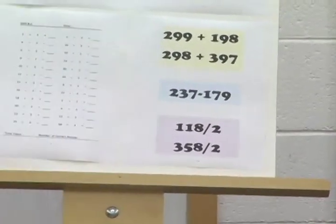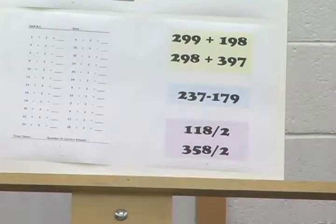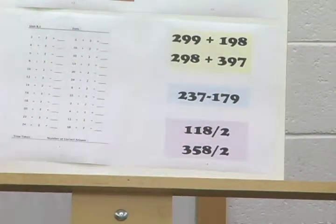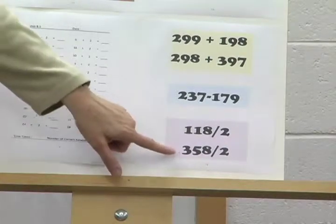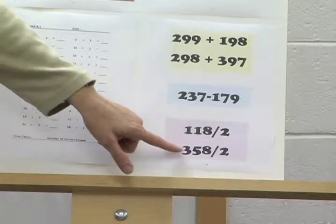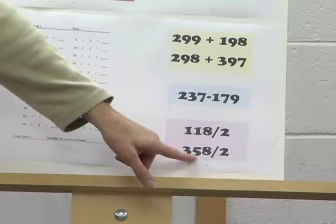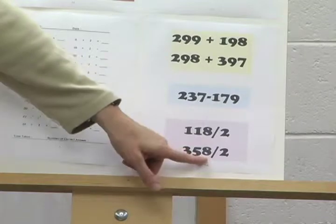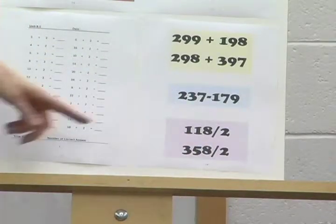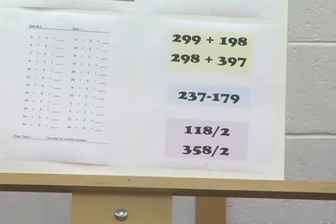Here's a division strategy — dividing by 2 mentally. For 118 divided by 2, just break it up: 100 divided by 2 is 50, 18 divided by 2 is 9, so it's 59. For a larger number like 358, the 300 gives 150, the 50 divided by 2 is 25 so you're up to 175, the 8 divided by 2 is 4 so you're up to 179. Again, it takes longer to say than it does to actually do.